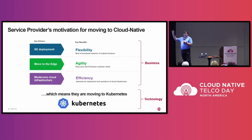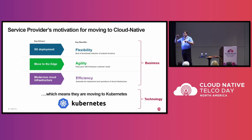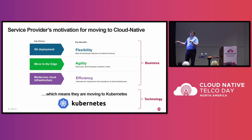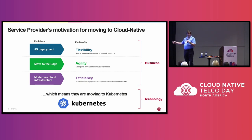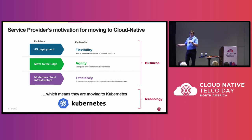Originally, when 5G was first being explained to me, our standards guy was talking about how great it was going to be with the containers and it was going to be cloud-native. Nobody actually knew what tools were going to be used to launch these cloud-native network functions. At the time, there were actually a lot of people who didn't want to use Kubernetes because it was a Google product. But once it was donated to the CNCF, it is now absolutely the tool of choice for doing anything cloud-native.